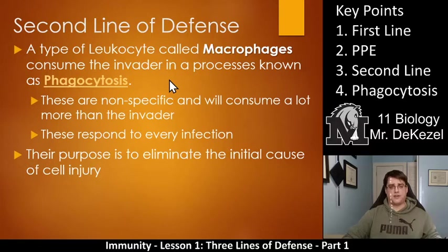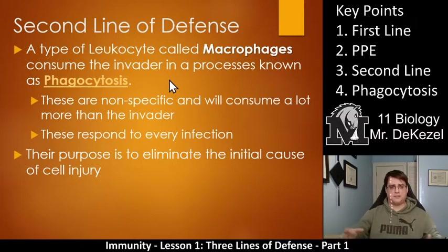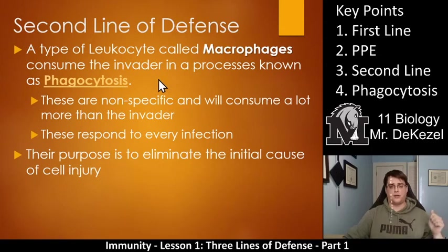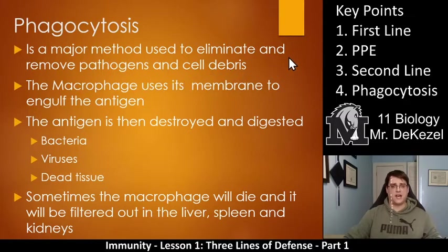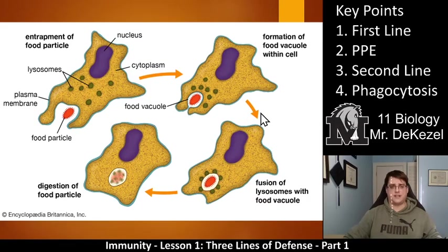The purpose of the second line of defense is to eliminate the initial cause of the cell injury. The antigen has set up a base, and you flood the area with everything you have to contain and kill all the antigens through phagocytosis — macrophages are the key white blood cells doing this. Phagocytosis is a major method used to eliminate and remove pathogens and cell debris. Even if a cell dies, the macrophage will come along and digest it. Essentially, the macrophage — as shown in the picture — is the cell doing this work.